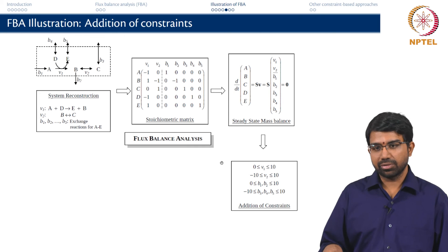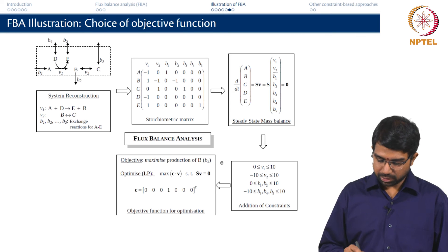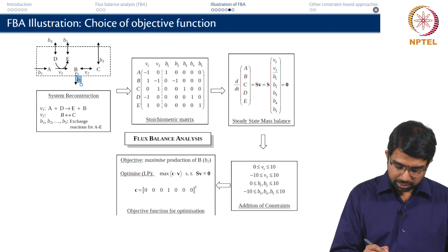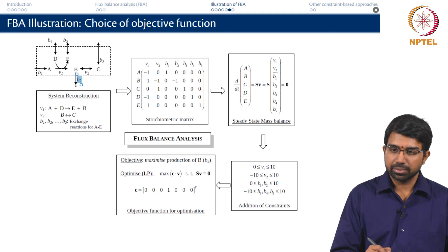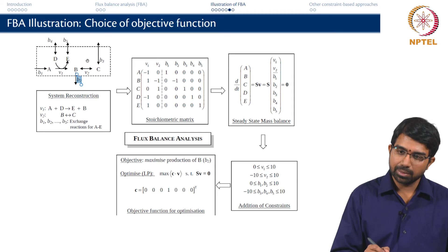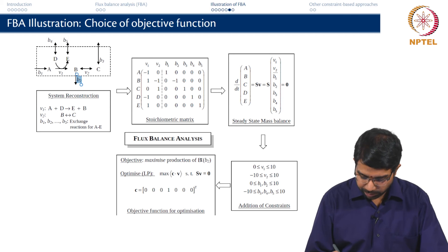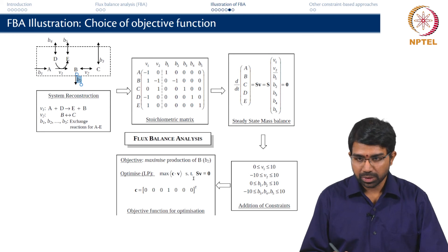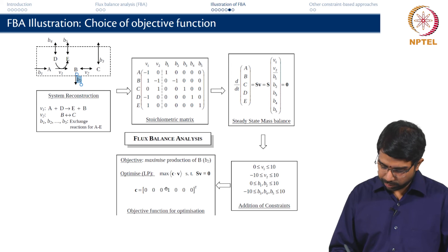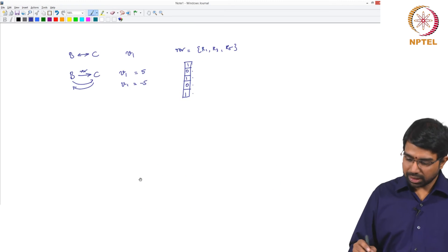What is the next step? I have assembled the constraints, yes I have to do the optimization. So I say my product of interest is B. So I maximize the secretion of B outside this cell. How much V is coming out of this cell. Which means maximize V2, which means maximize 0 0 1 0 0 0 1 0 0 0 into this vector. I am just putting it back into the canonical form.